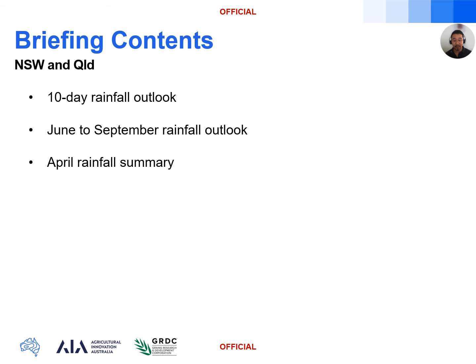In this update, we'll first look at the 10-day rainfall forecast, followed by the rainfall outlook to September, and then a look back at the April that was.